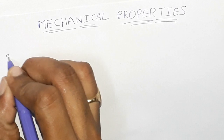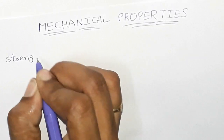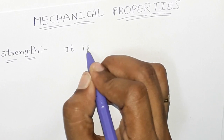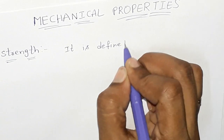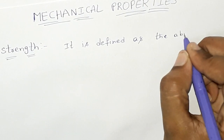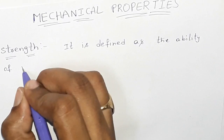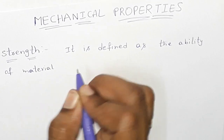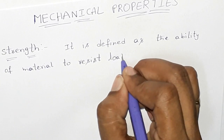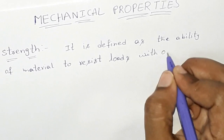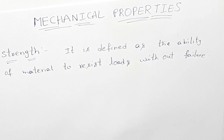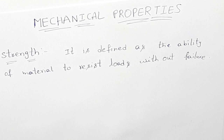We will talk about the first one: strength. Strength — to resist loads without failure. Strength is defined as the ability of a material to resist loads without failure.